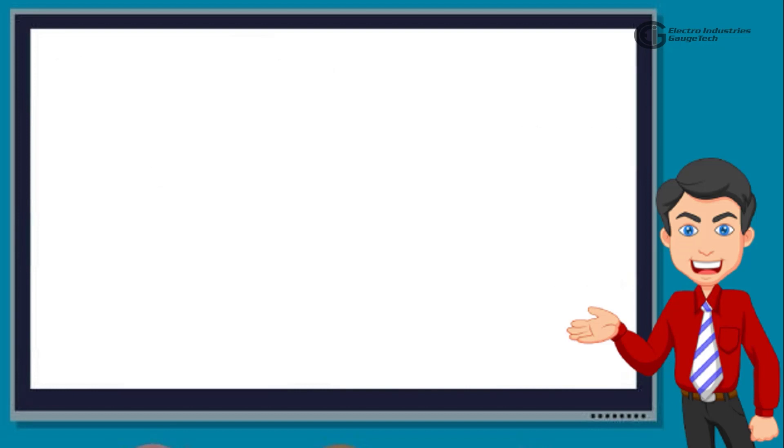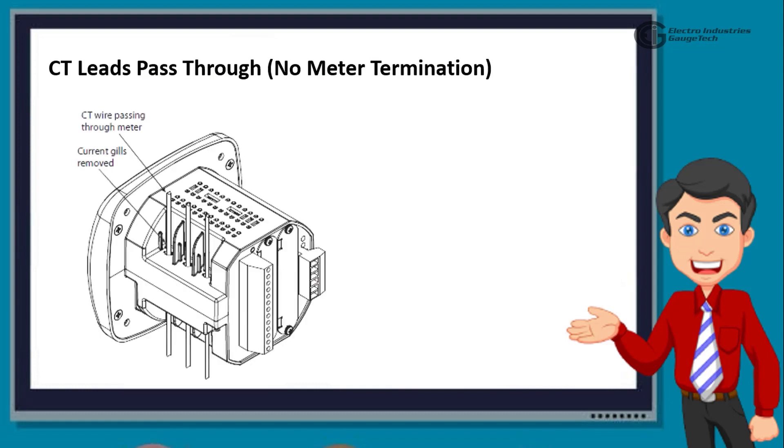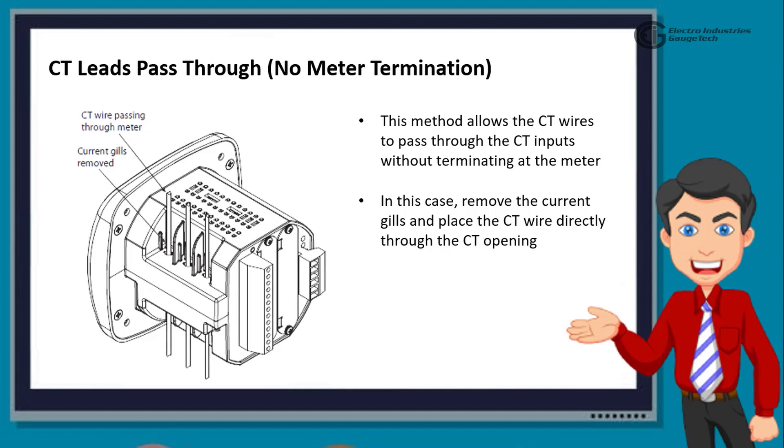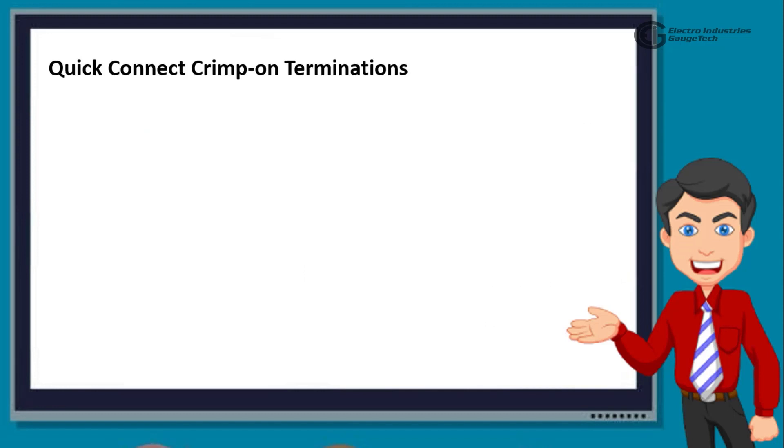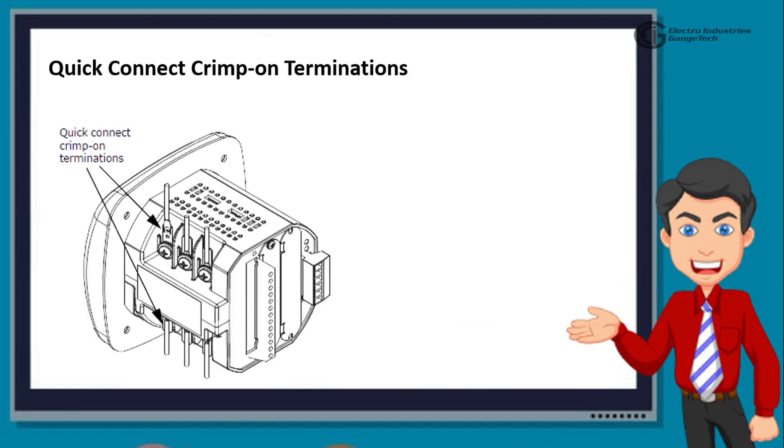We will look at other current connections along with voltage and RS485 KYZ connections and wiring diagrams later in this video. After this, we move to the next section, which is CT leads passed through no meter termination. This method allows the CT wires to pass through the CT inputs without terminating at the meter. In this case, remove the current gills and place the CT wire directly through the CT opening. The opening accommodates up to 0.177 inches or 4.5 millimeters maximum diameter CT wire. Next, we have the quick connect crimp-on terminations. For quick termination or for portable applications, 0.25 inches quick connect crimp-on connectors can also be used.